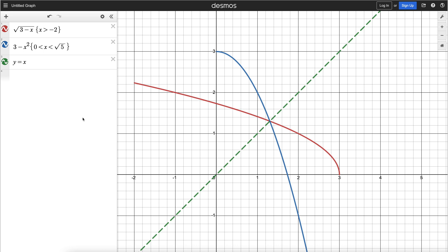Anytime you have a function and its inverse graphed on the same set of axes, you'll have this property—this nice symmetry across the diagonal line y equals x. This happens with all inverses. It can be logarithmic and exponential, or trig functions and inverse trig functions.